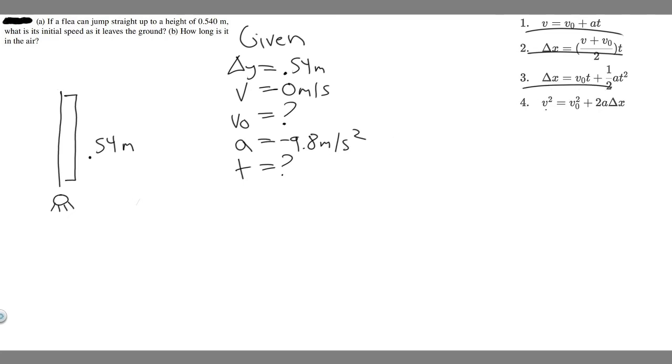So let's start plugging in. V we know is 0, so 0 squared is just 0. Equals V sub 0 squared, which is our variable, plus 2 times A. We know A is -9.8, the force of gravity, times delta X. In this case, we're using delta Y because it's vertical, because Y axis is vertical, X is horizontal. So 0.54 for that.